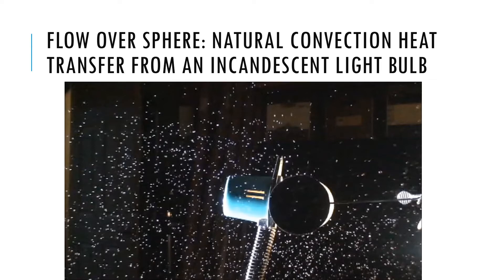First, let us observe what we mean by natural convection over a sphere. We will observe what happens over a heated sphere by using an older style light bulb that heats the surrounding air. The surrounding hot air then rises—that's what we want to see.